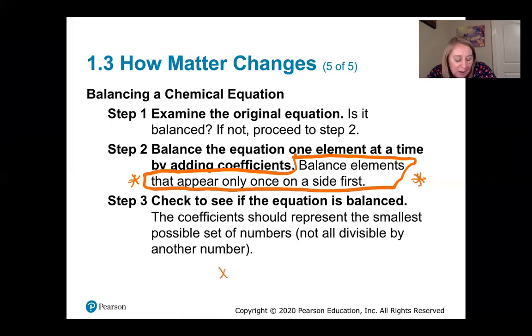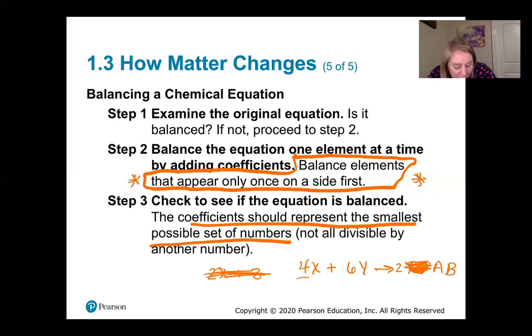Sometimes you're going to get coefficients like four, six, and two - this is what I came up with when I balanced my equation. All of these numbers are divisible by something. I could divide all of these numbers by two. If I do that, I get two, three, and one, and that's my lowest possible ratio. That would be my balanced chemical equation, but we're going to do some examples so that you can see that.